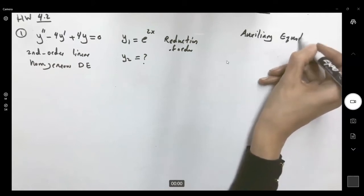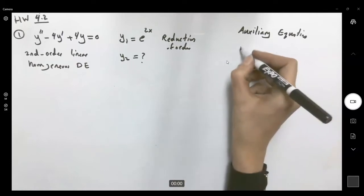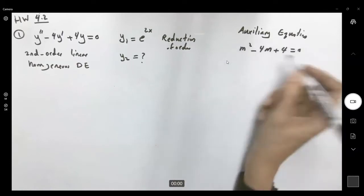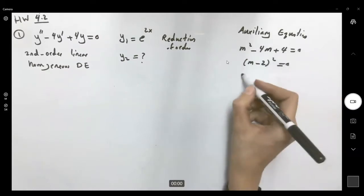In auxiliary equation, we form the quadratic equation m squared minus 4m plus 4 equal to 0, which is m minus 2 squared equal to 0. m is 2.